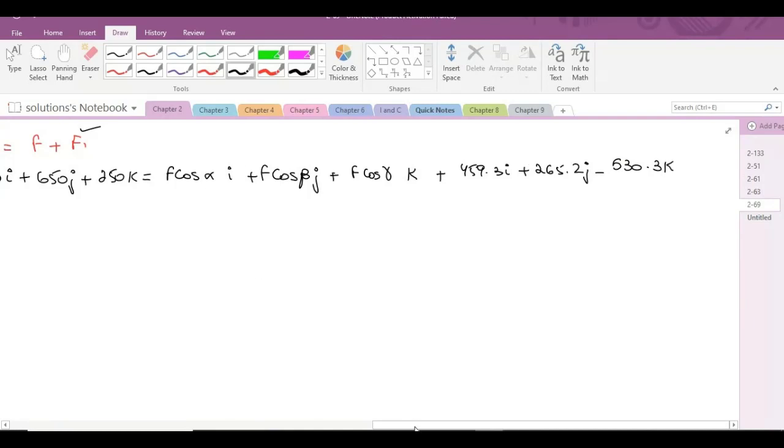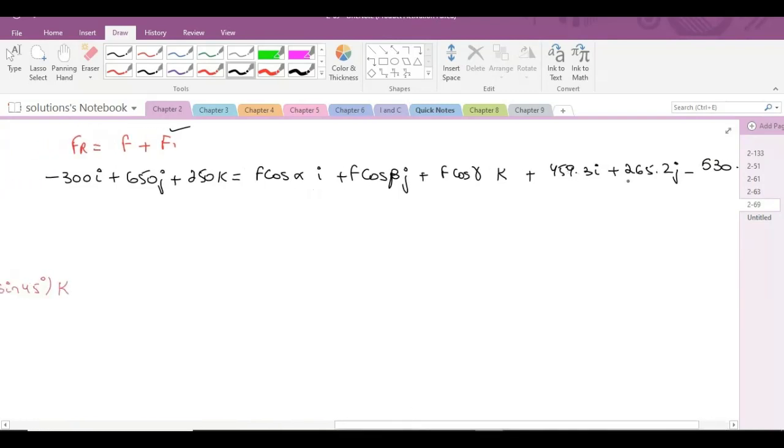F cos alpha i plus F cos beta j plus F cos gamma k plus 459.3 i plus 265.2 j minus 530.3 k.